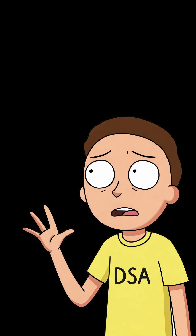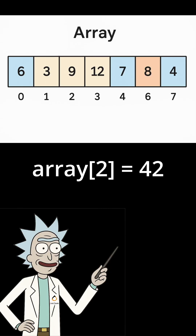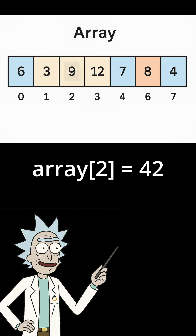But how do arrays actually work? How do we add or change stuff in them? It's dead simple, Morty. To put a value in an array, you just use the index and assignment operator. Like array[2] = 42, bam — whatever was there before is gone, replaced by your new value. It's like how I replaced your original dimension with this one, quick and dirty.